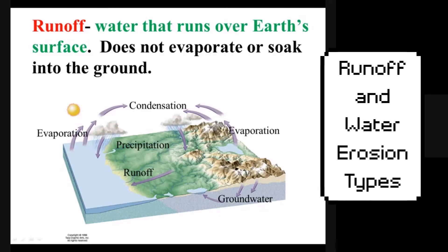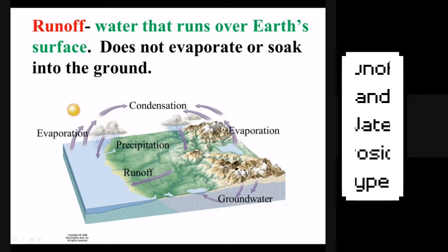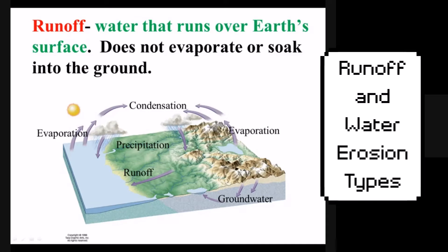This lesson will be about river erosion. River erosion starts with runoff. Runoff is any water that runs over the earth's surface, most of that being rivers. Runoff could come from two sources: either groundwater coming up from underground, or precipitation falling from above the ground. Once that water runs on the earth's surface, it is runoff and it can form a river.